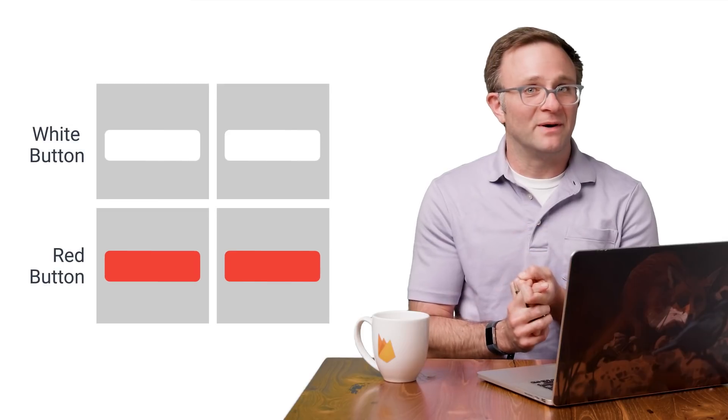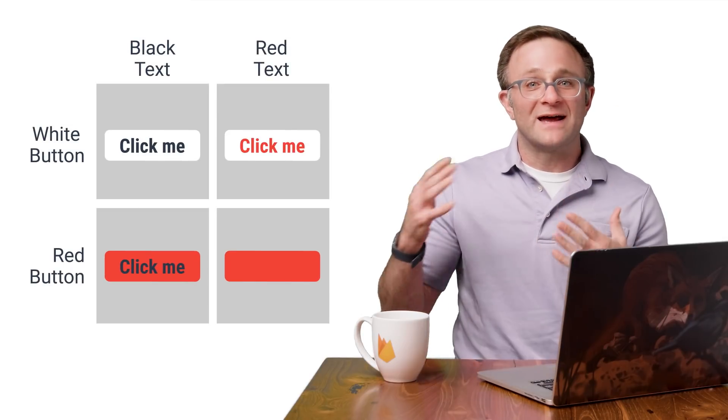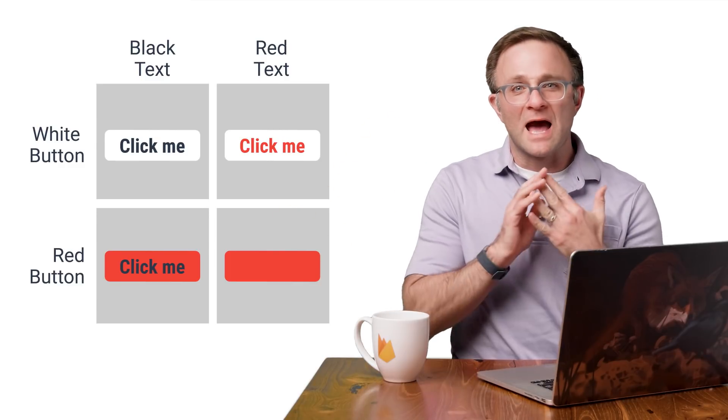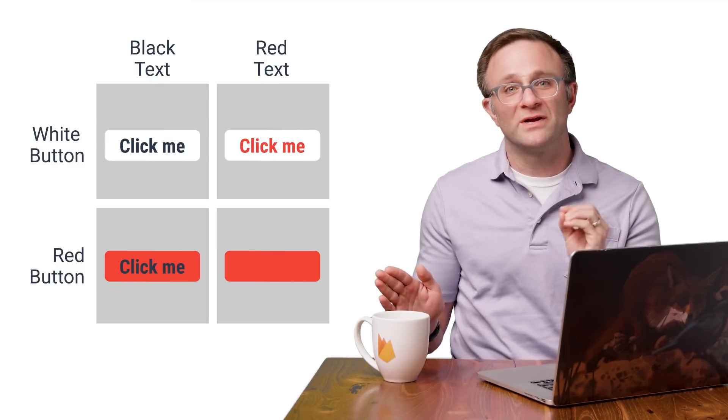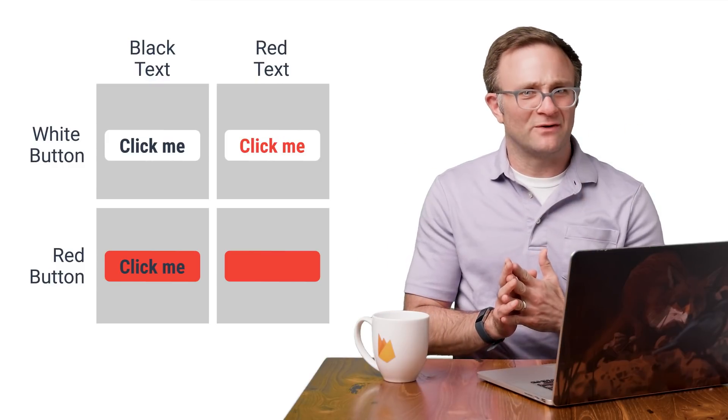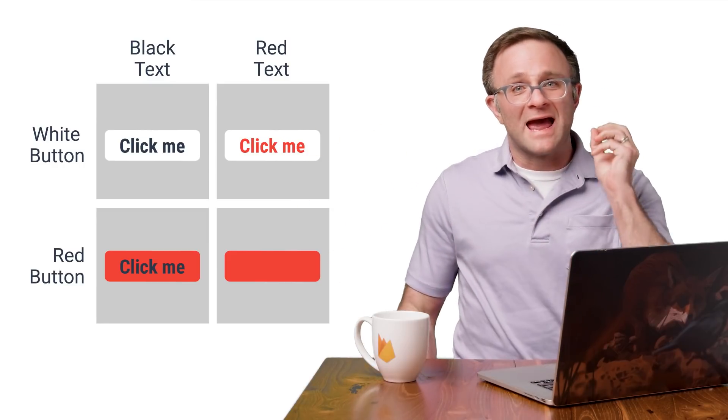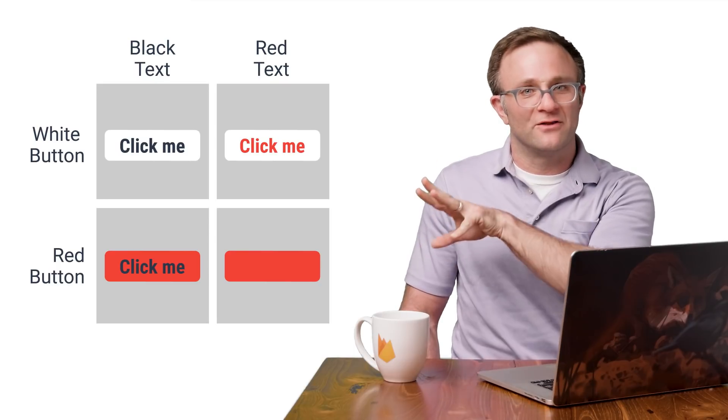So to use a somewhat contrived example, imagine I've got two experiments, one where I'm testing the background colors of my buttons, and another where I'm testing the text color of my buttons. Well, if I decide to push these experiments to like 100% of my population, about half the people in my red background color experiment are going to end up with unreadable buttons, and that's going to skew my results.